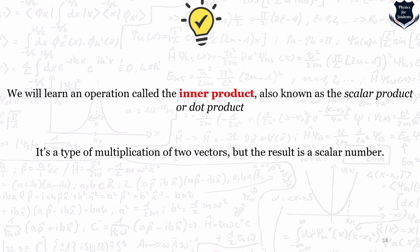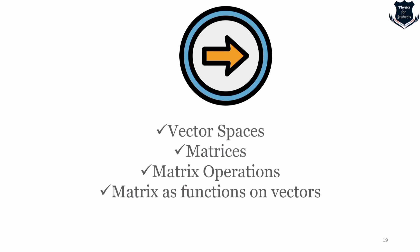That brings us to the end of today's video. We learned about vector operations, the rules governing them, and — most importantly for quantum mechanics — complex plane and complex vectors and how their operations work. In the next video we will move into vector spaces, then matrices, matrix operations, and matrices as functions on vectors.